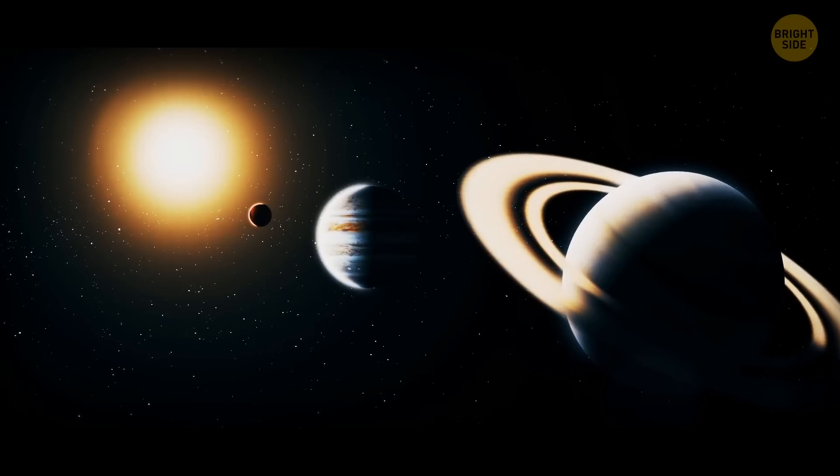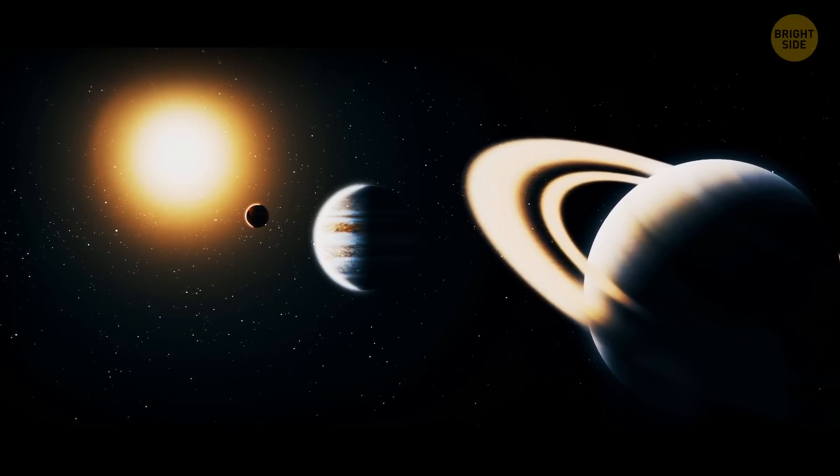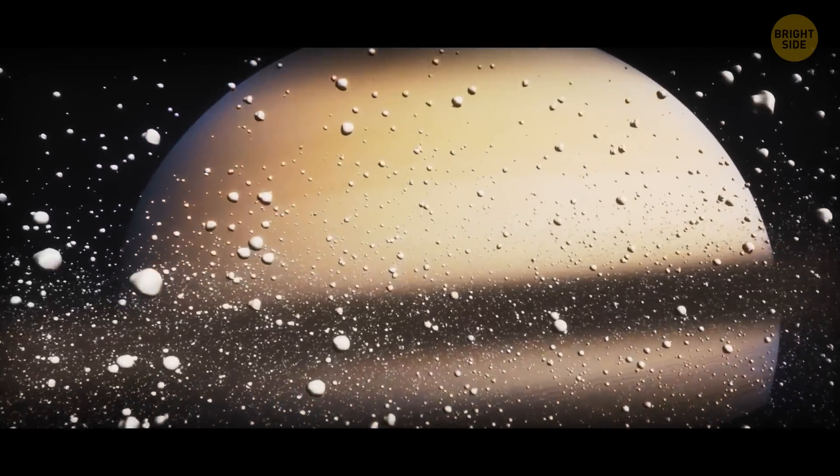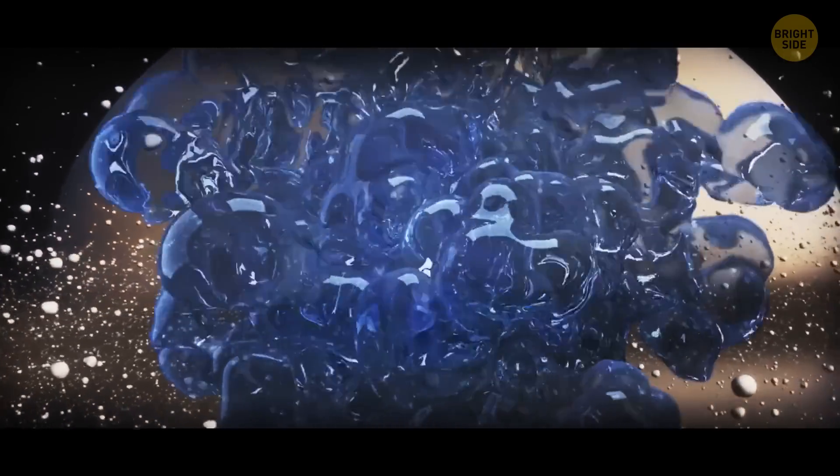Like Jupiter, Saturn might have a rocky core, with hydrogen and helium surrounding it. On the other hand, even if it is made up of rocky material, the core can still be liquid.